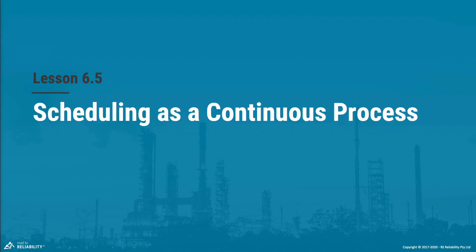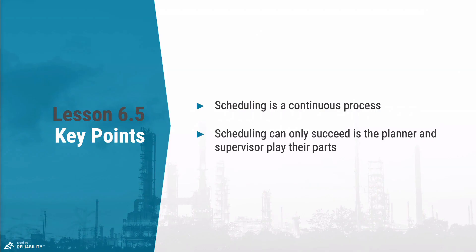Welcome to lesson 5 of module 6, in which we'll look at scheduling as a continuous process. This is going to be a short lesson with a couple of key points. The first is that you need to see scheduling as a continuous process, and in this lesson I will compare scheduling to a conveyor belt with buckets of work that a scheduler needs to fill. Looking at scheduling like this will help you understand how the continuous development of the frozen weekly schedule works.